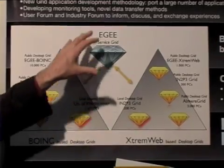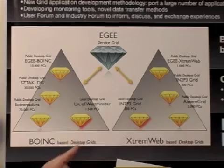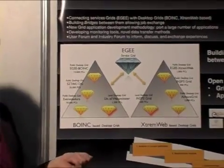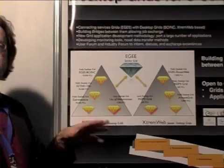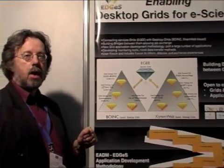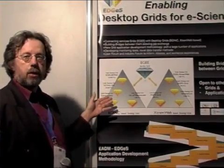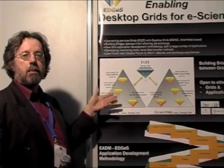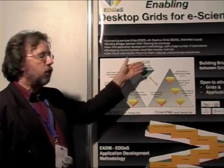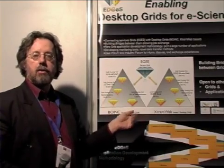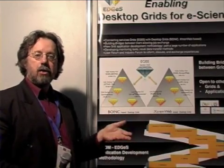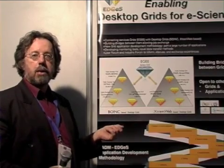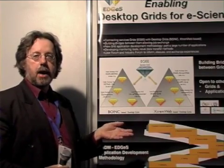This way, within EGI you get much more resources — tens of thousands more computers at your disposal than within EGI itself. On the other hand, it is also possible for people that know how to program desktop grids to submit jobs to EGI and make use of the infrastructure there. So we make it easier for scientists to get much more computing capacity than they currently have.